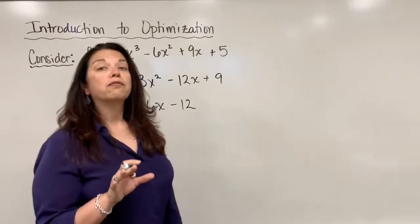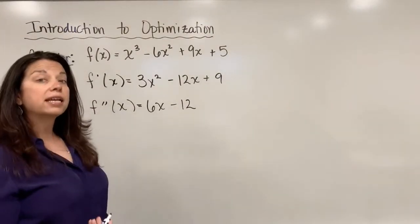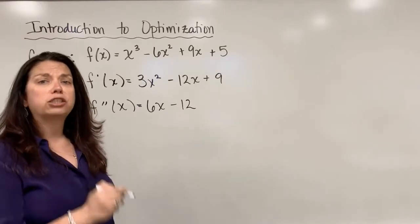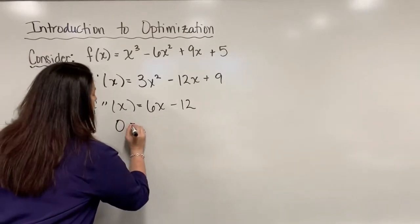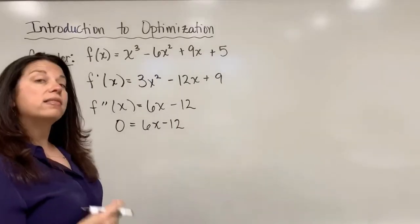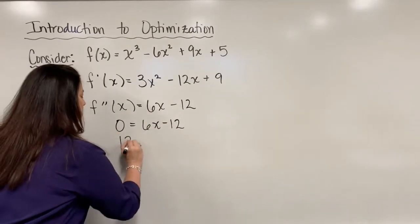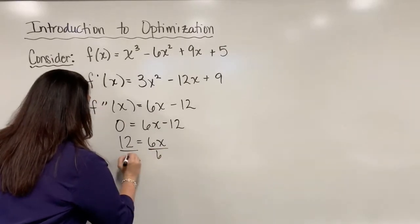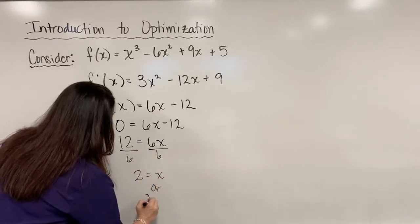Just like with the first derivative test, what we are now going to do is set this second derivative equal to 0 because we are looking for where that concavity changes. I'm going to let f''(x) = 0, so 6x minus 12 equals 0. I'll add 12 to both sides, divide by 6, and I will end up with x equals 2.